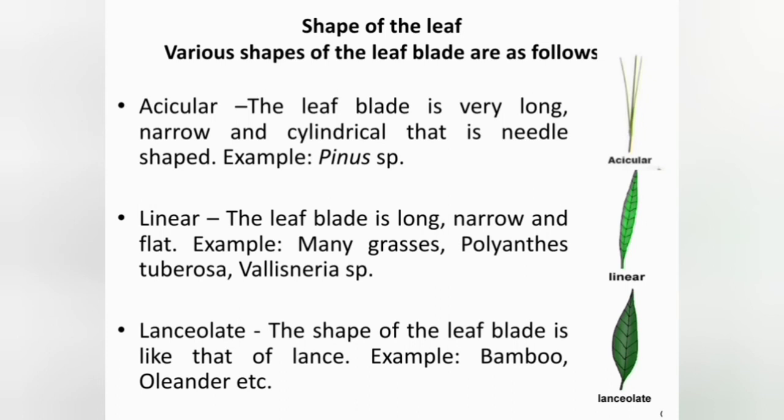Now we see terminologies about the various shapes of leaves. Acicular: the leaf blade is very long, narrow and cylindrical — needle-shaped. E.g., Pinus species. Linear: the leaf blade is long, narrow and flat. E.g., many grasses, Polyanthus tuberosa, Vallisneria species. Lanceolate: the shape of the leaf blade is like that of a lance. E.g., bamboo, oleander.